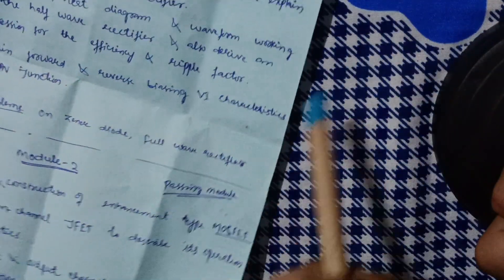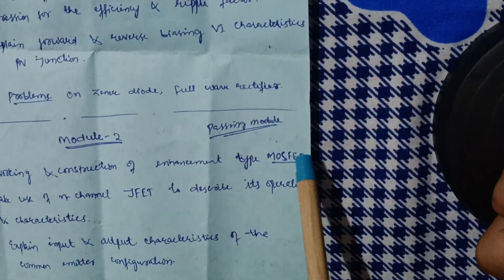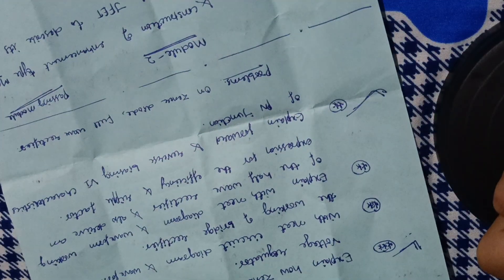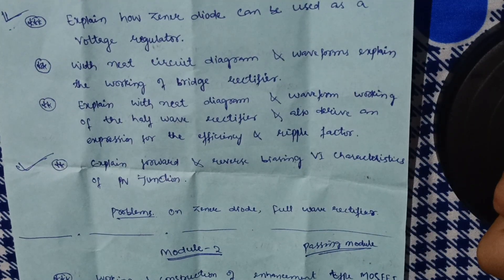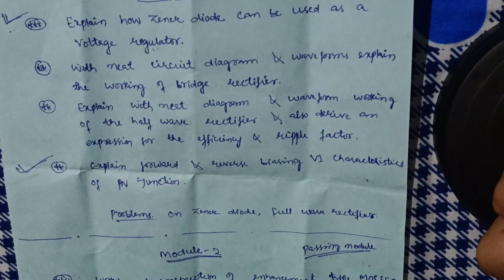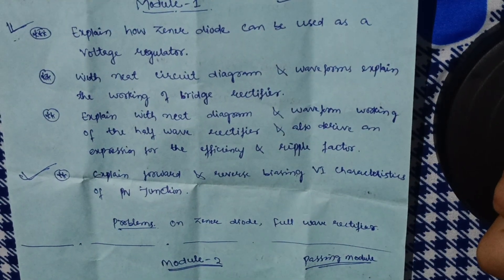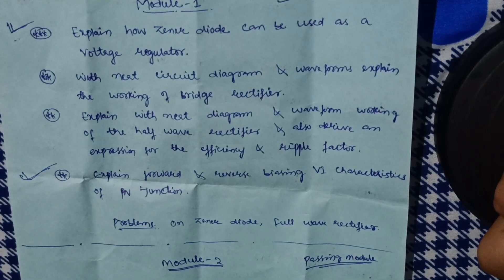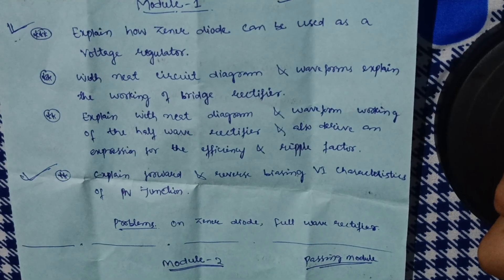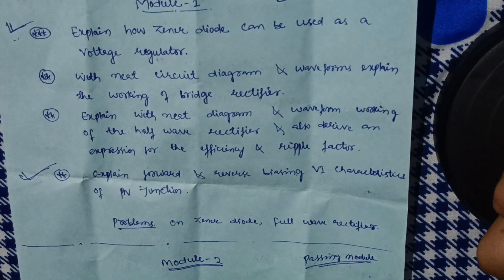So the passing modules are module one, module two, and module four. These are the passing modules you have to focus on if you want to conquer the subject. You should also try some problems so that it will be easy to conquer this toughest subject as far as first and second sem is concerned — that is basic electronics, where most students have backlogs. I hope this video is beneficial for you. Make sure to share it with your batchmates so they can also benefit, and by subscribing to this channel I can make more and more videos for you. Thank you for watching.